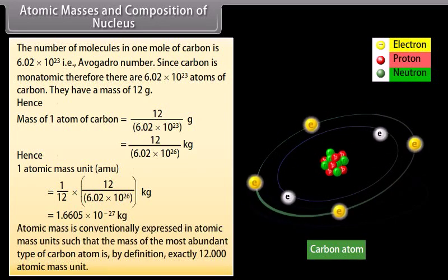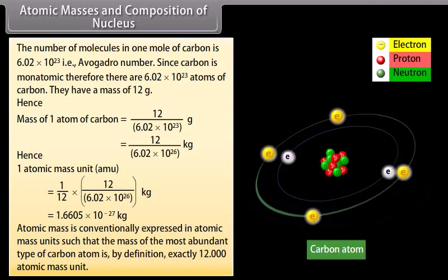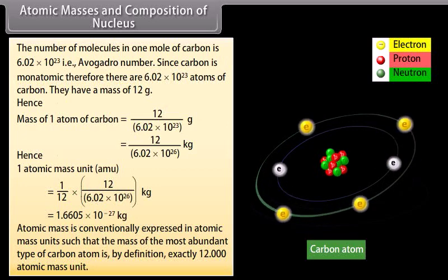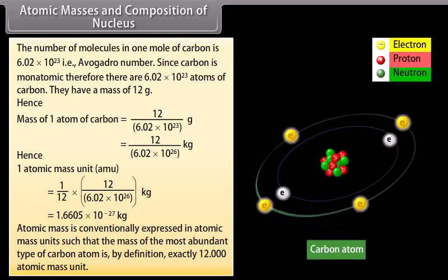Atomic mass is conventionally expressed in atomic mass units such that the mass of the most abundant type of carbon atom is, by definition, exactly 12 atomic mass unit.